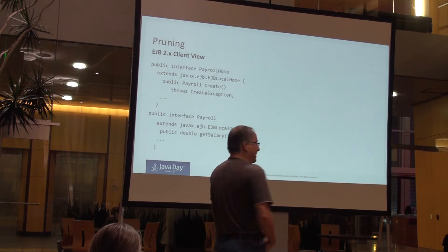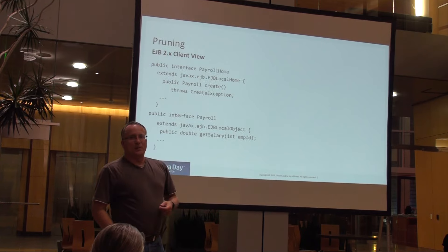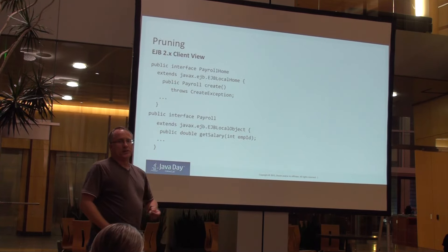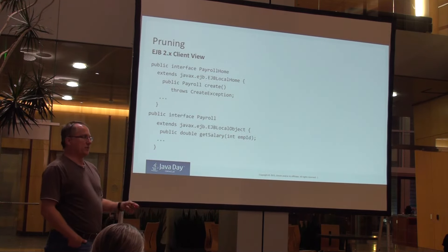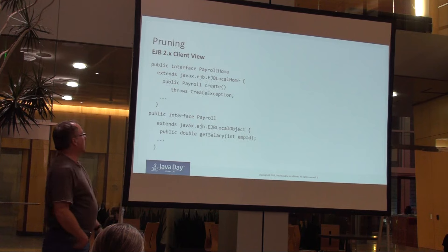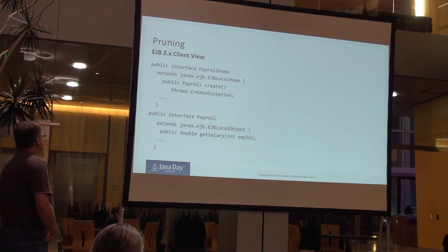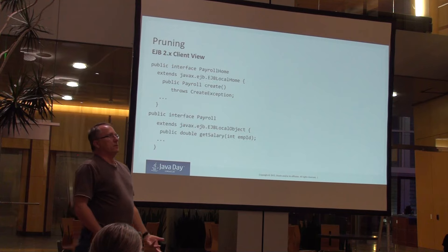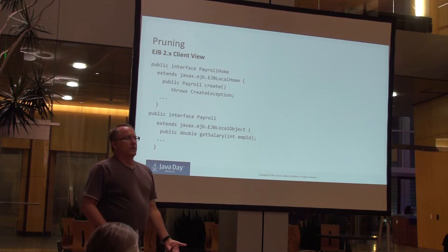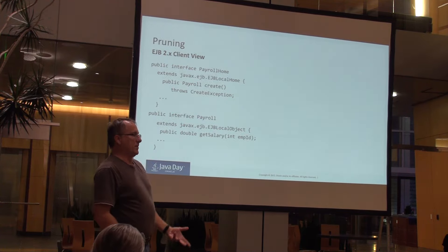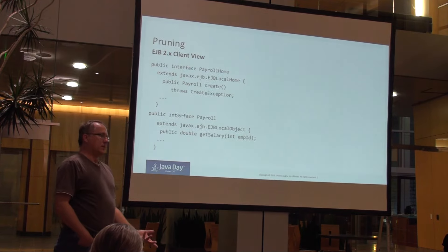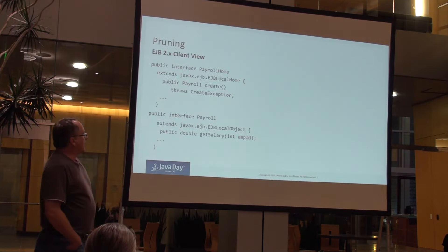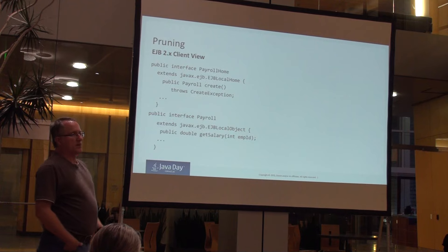Pruning: it's important to remove obsolete technology so the platform doesn't just keep getting bigger. In Java EE 7, we got rid of the old-style EJBs. EJB 3 has been around since 2006, so we can get rid of the old-style stuff because no one uses it anymore.